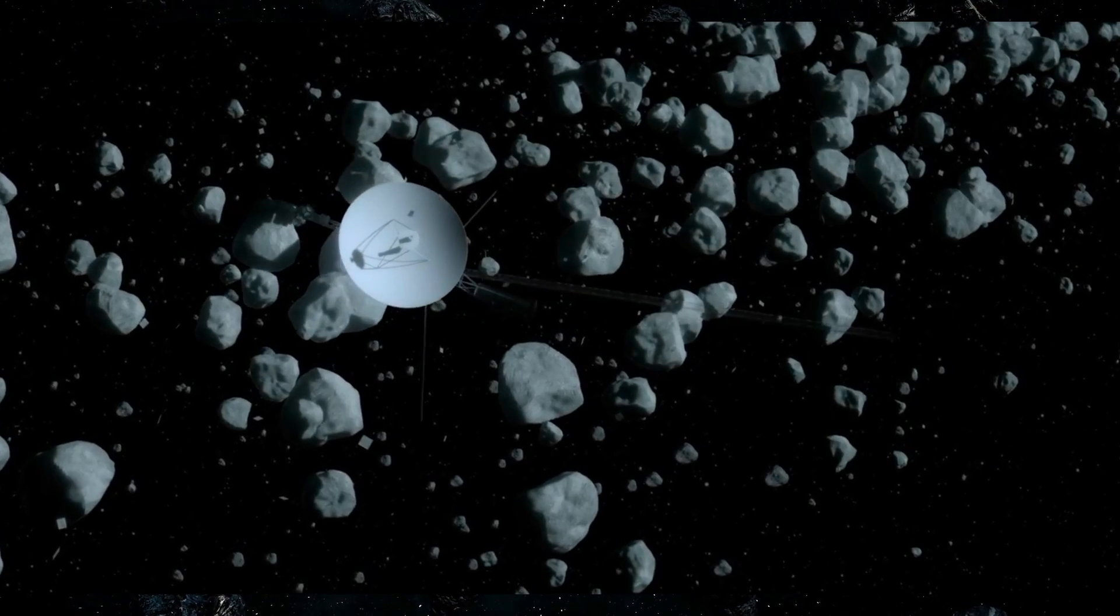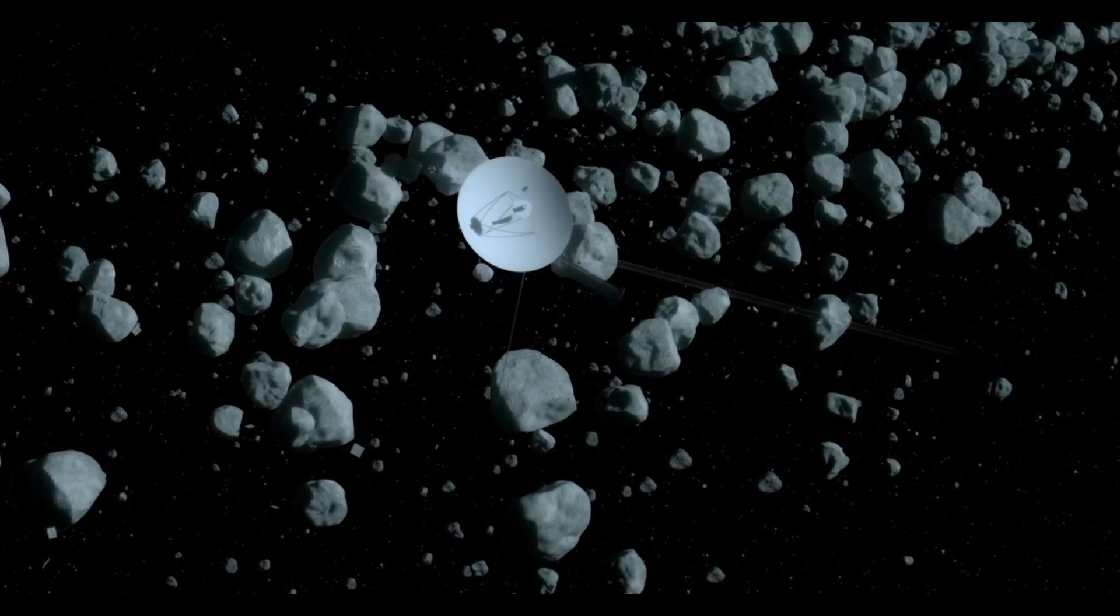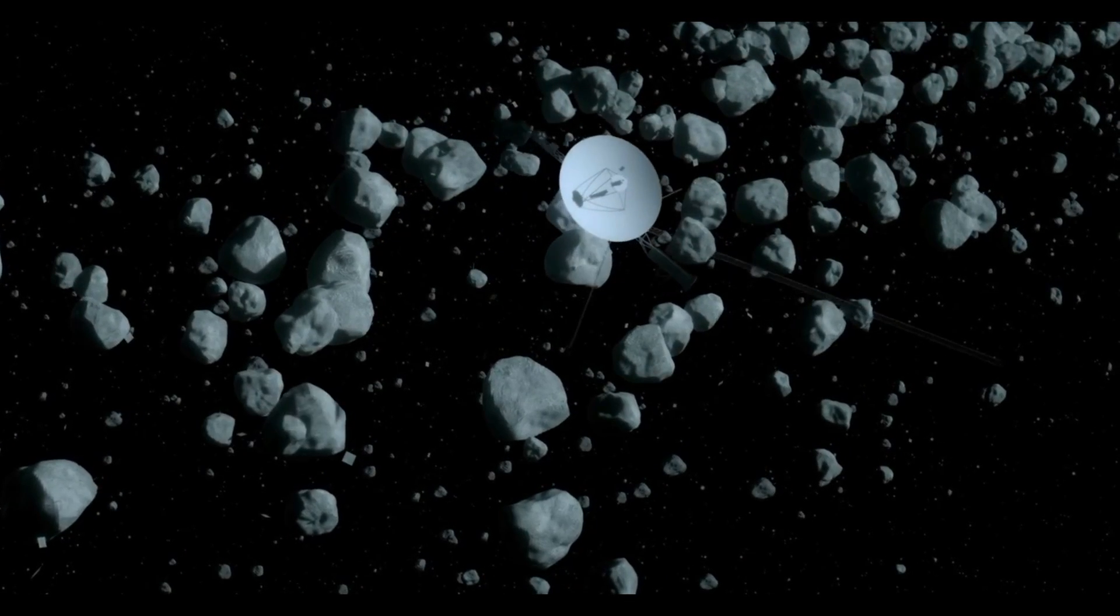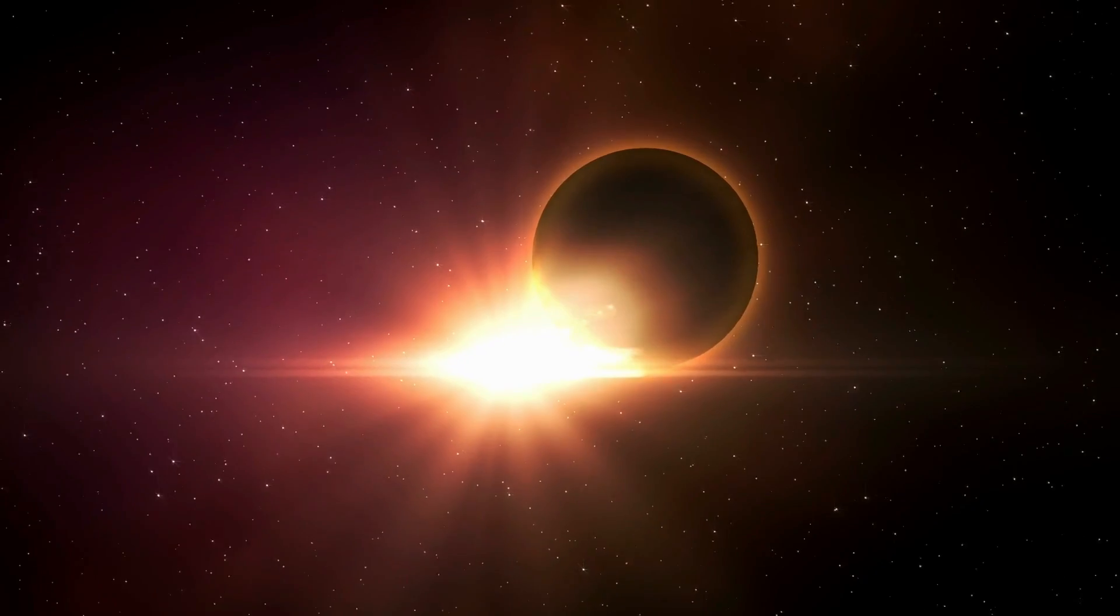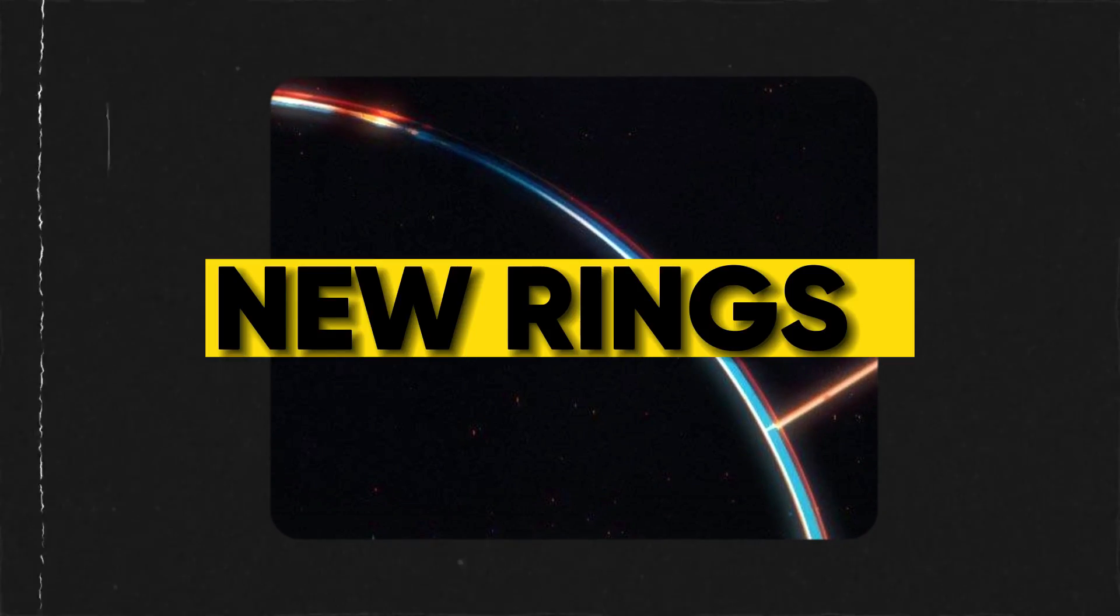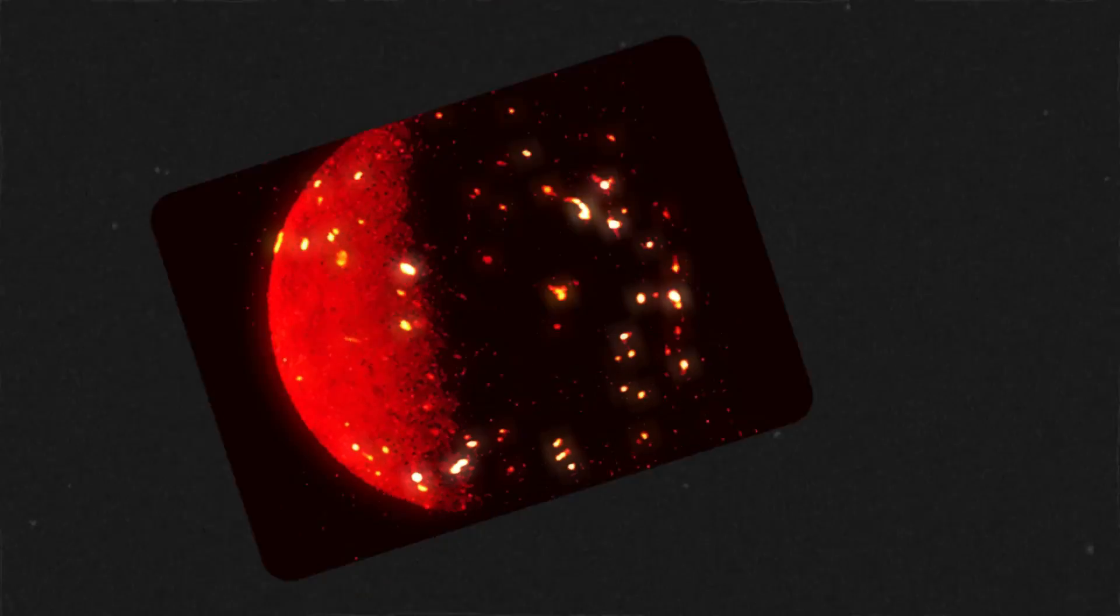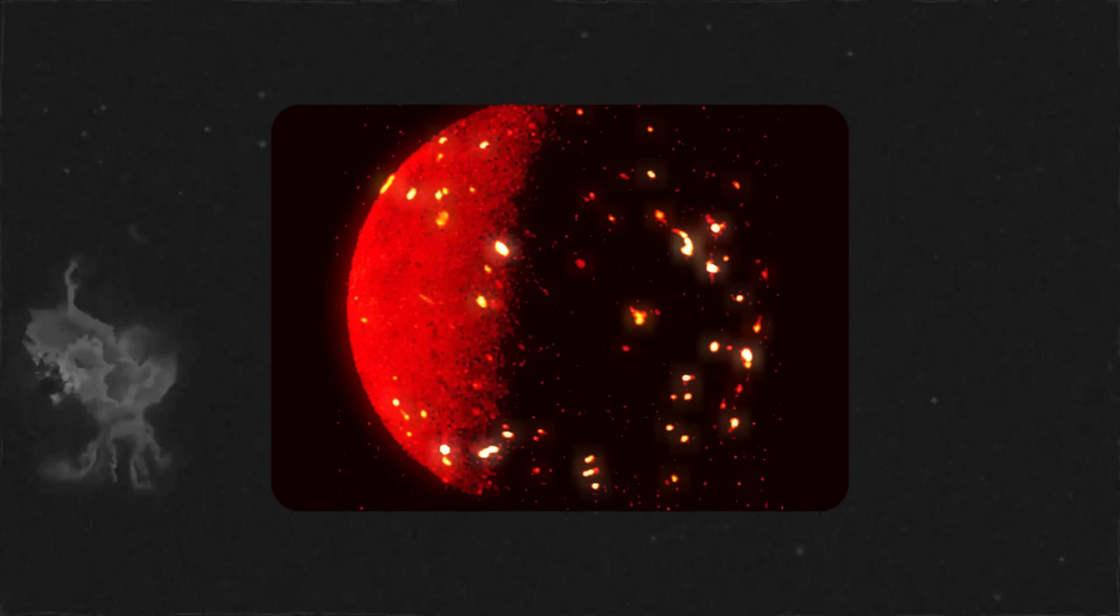But, despite these obstacles, the Voyager spacecrafts continued to send back invaluable data about the outer planets and their moons. They discovered new rings around Jupiter and detected active volcanoes on Io, one of Jupiter's moons.